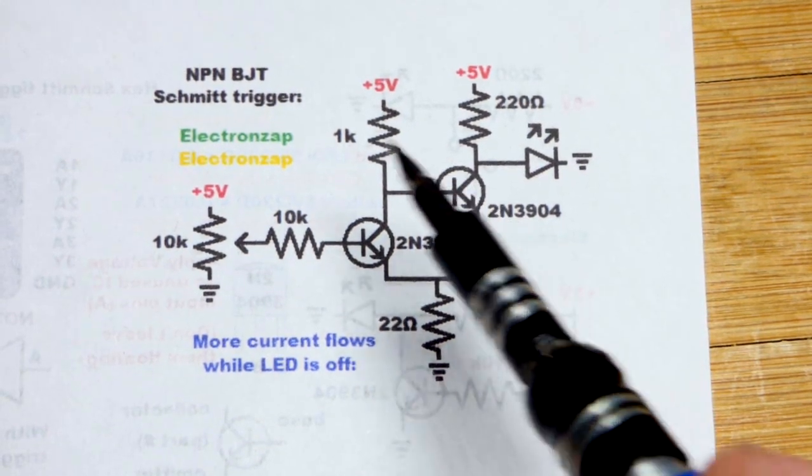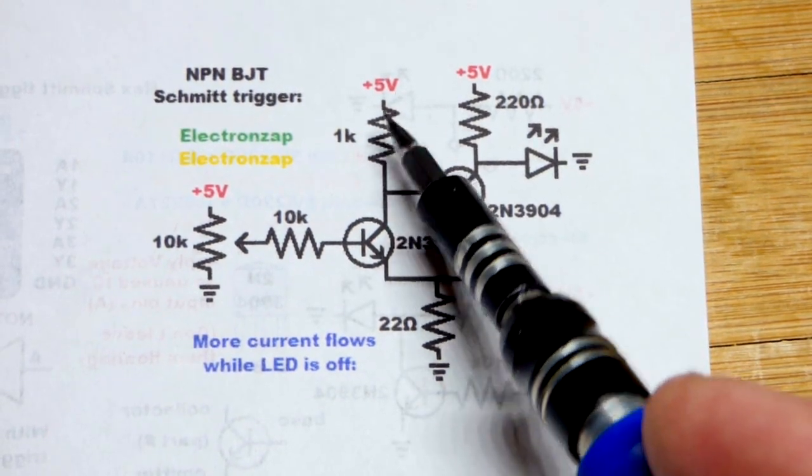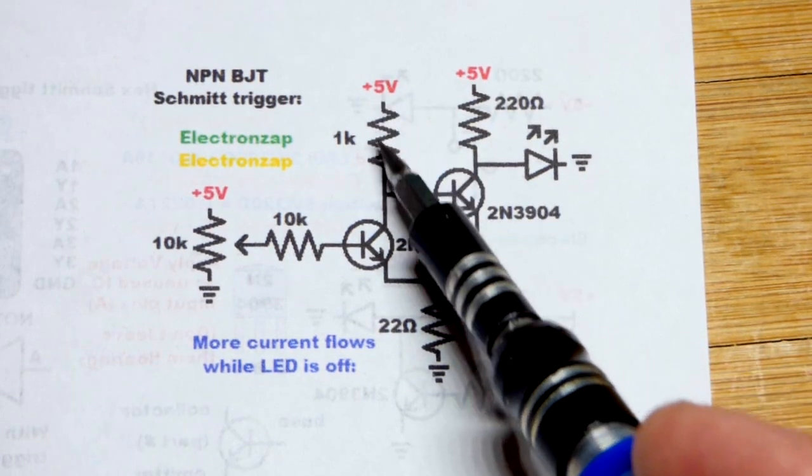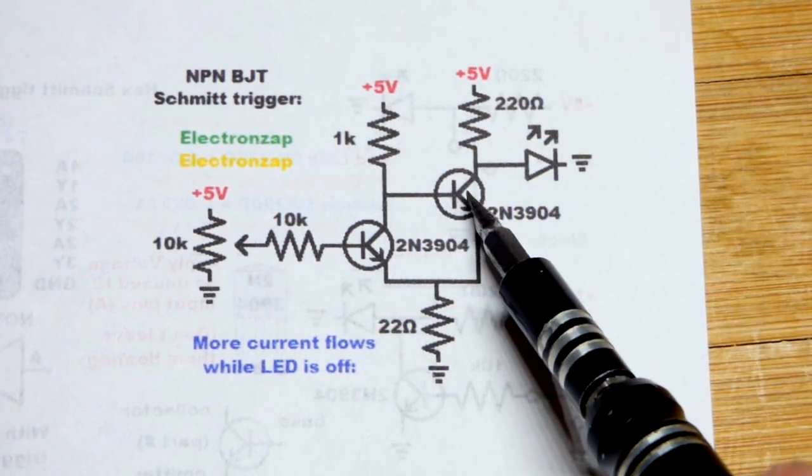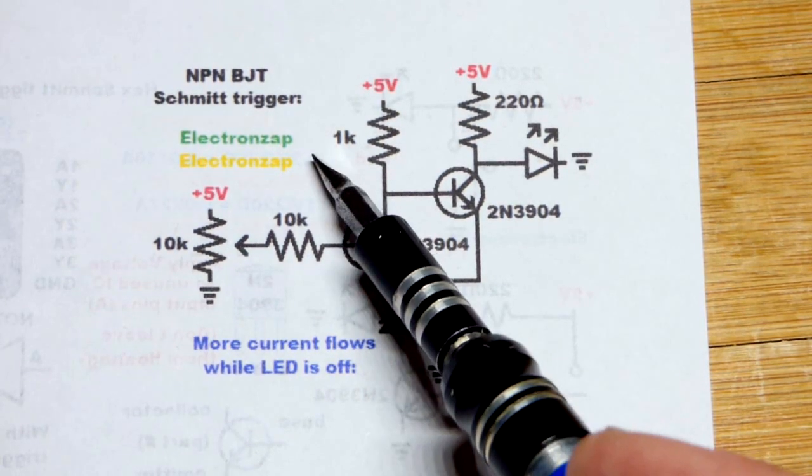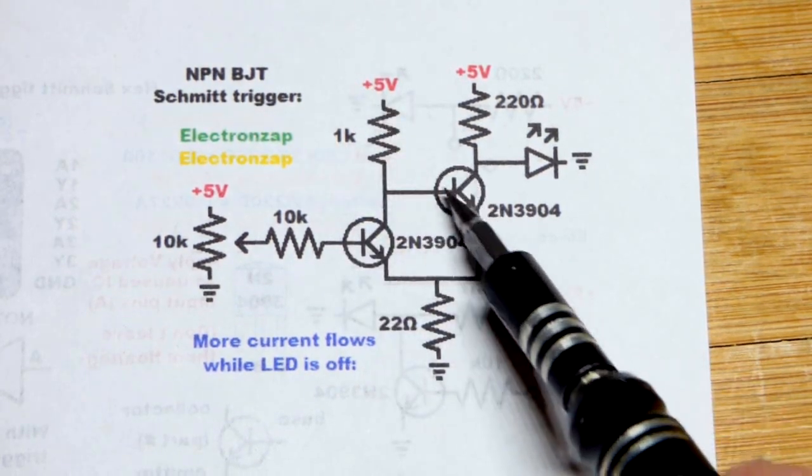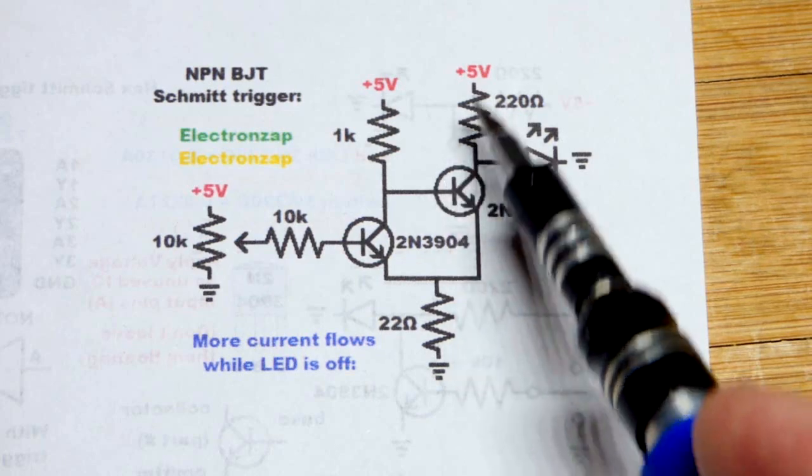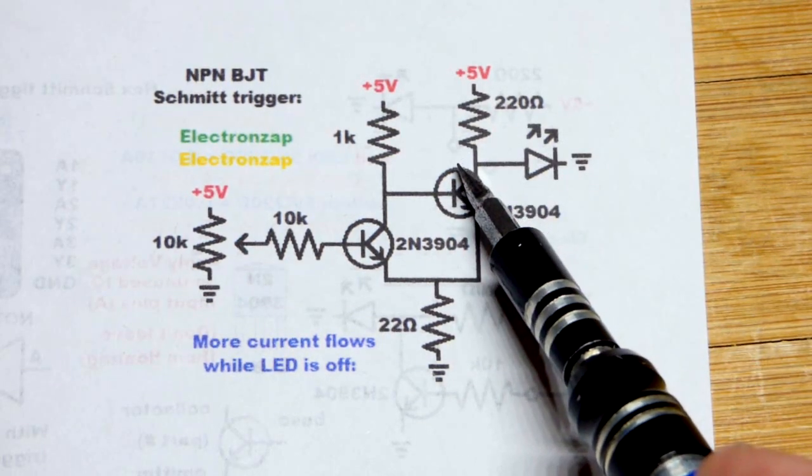But in any case, we have the one kilo ohm resistor. As I said before, that keeps this transistor on naturally right there. If that transistor is off, like it doesn't exist, then that one's on. It takes all the current through the 220 ohm resistor.